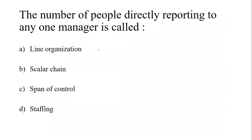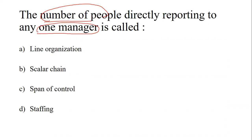The next question is: the number of people directly reporting to any one manager. The options are line organization, scalar chain, span of control, and staffing.